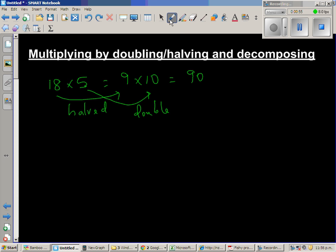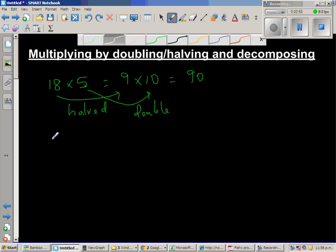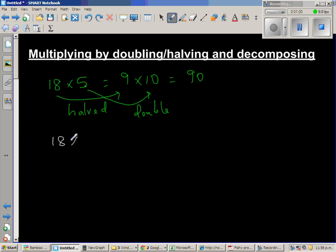By decomposing, how would you do this? The same thing. 18 times 5 is same as 5 times 18. This is called the commutative property. 5 times 18. This is same as 5 times 10 plus 5 times 8. So this is nothing but 50 plus 40 which is equal to 90.